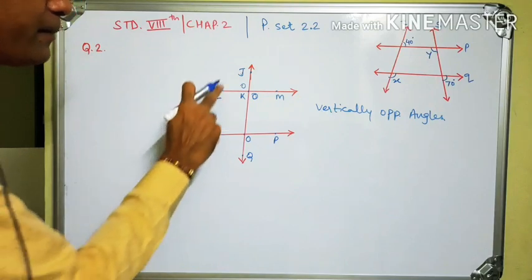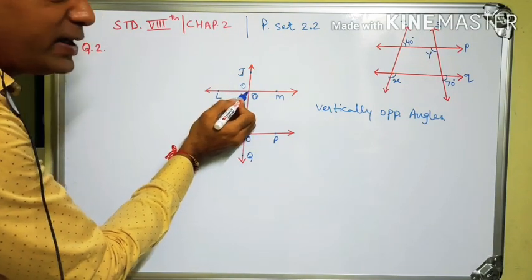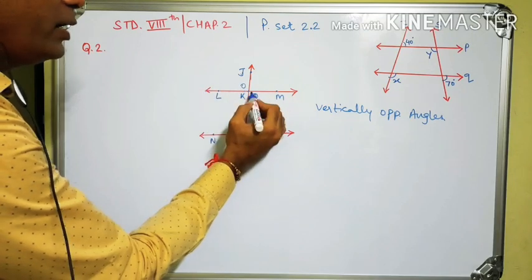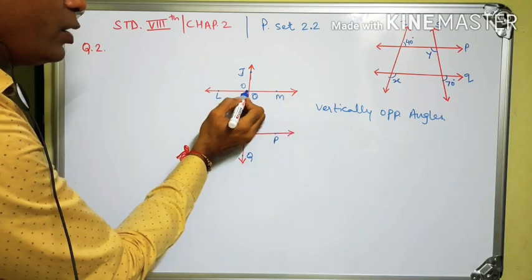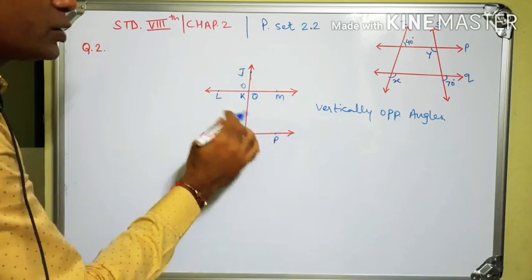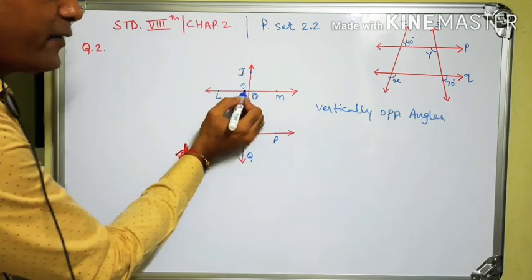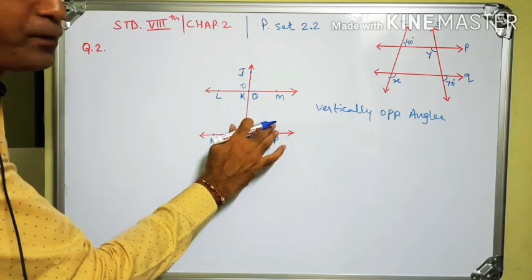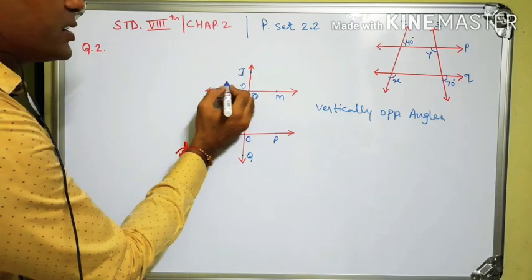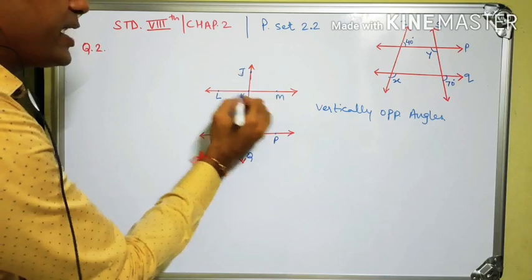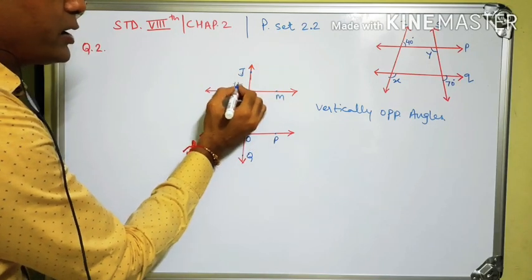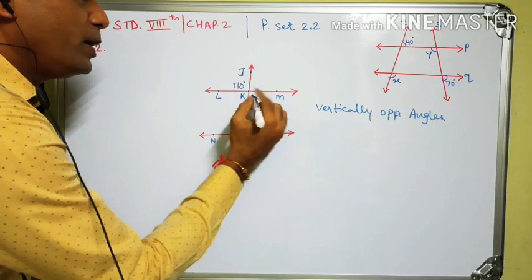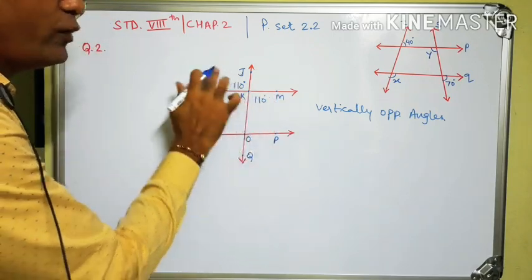Ray KL and ray KM, ray KJ and ray KO form two pairs of opposite rays with common vertex point K. Therefore these two angles are vertically opposite angles. The property: if angle JKL is 110 degrees, then angle MKO is also 110 degrees. Vertically opposite angles are always congruent.